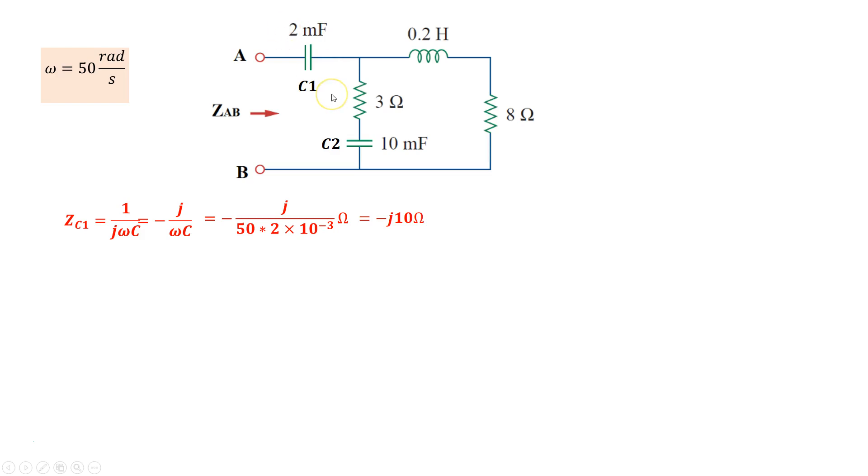Similarly, we use the same formula for c2, and c2 is 10 millifarads, so we obtain -j2 ohms as the impedance of capacitor c2.